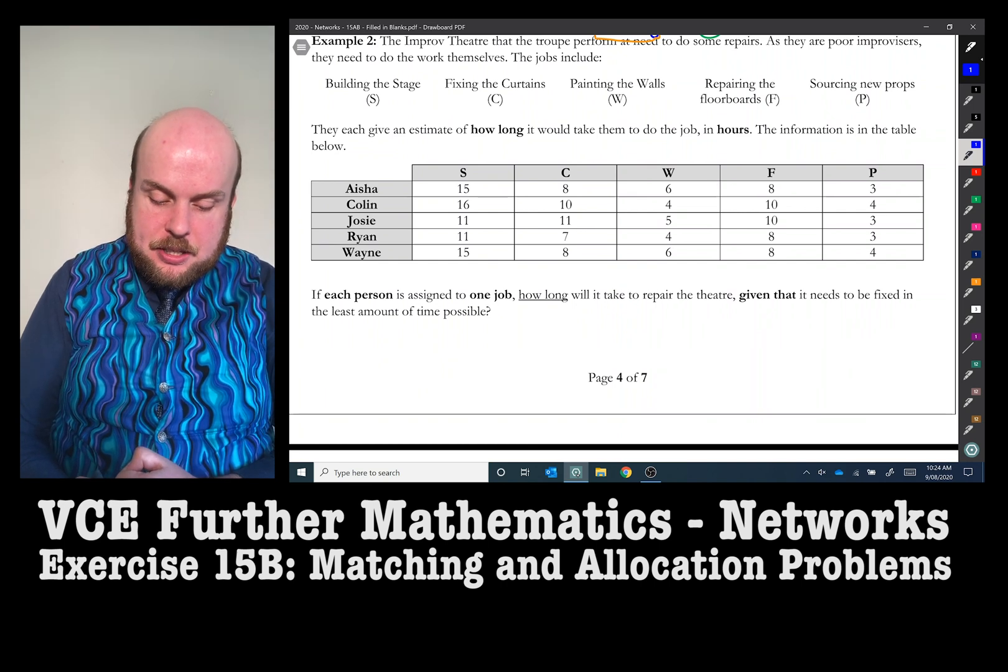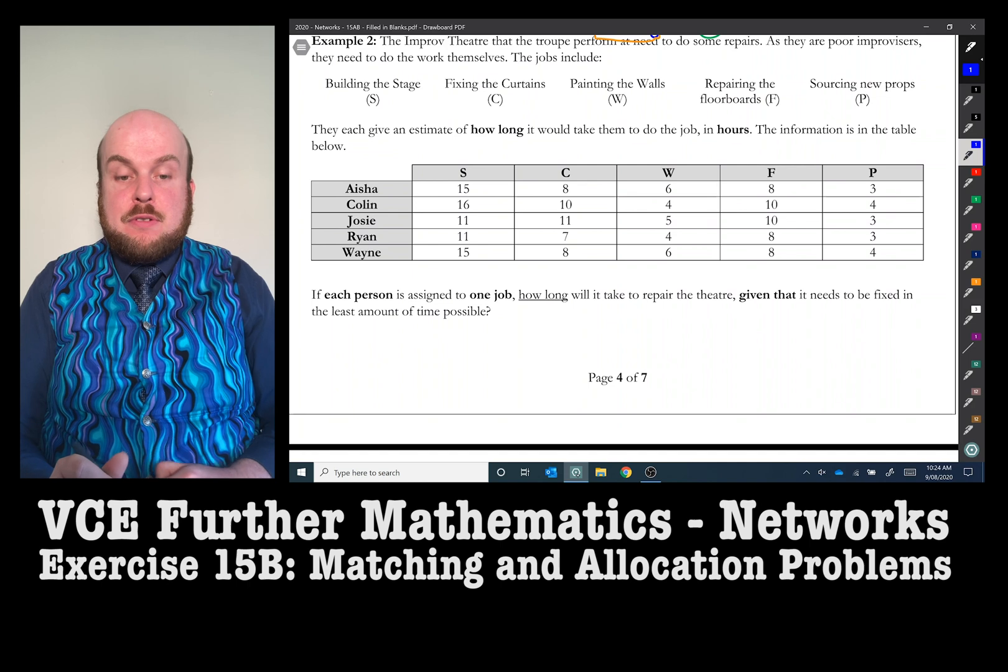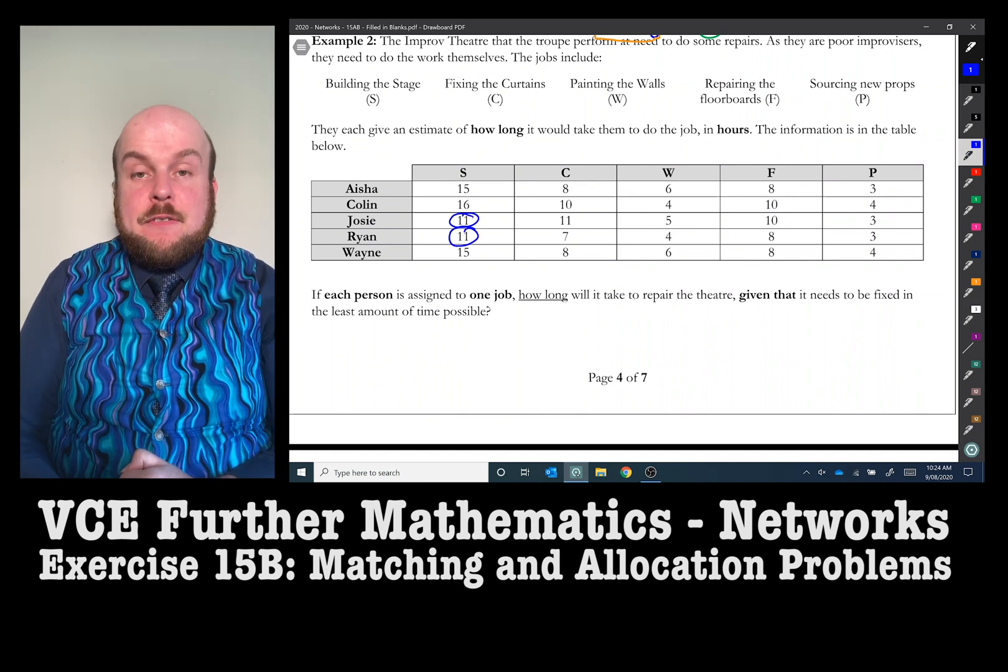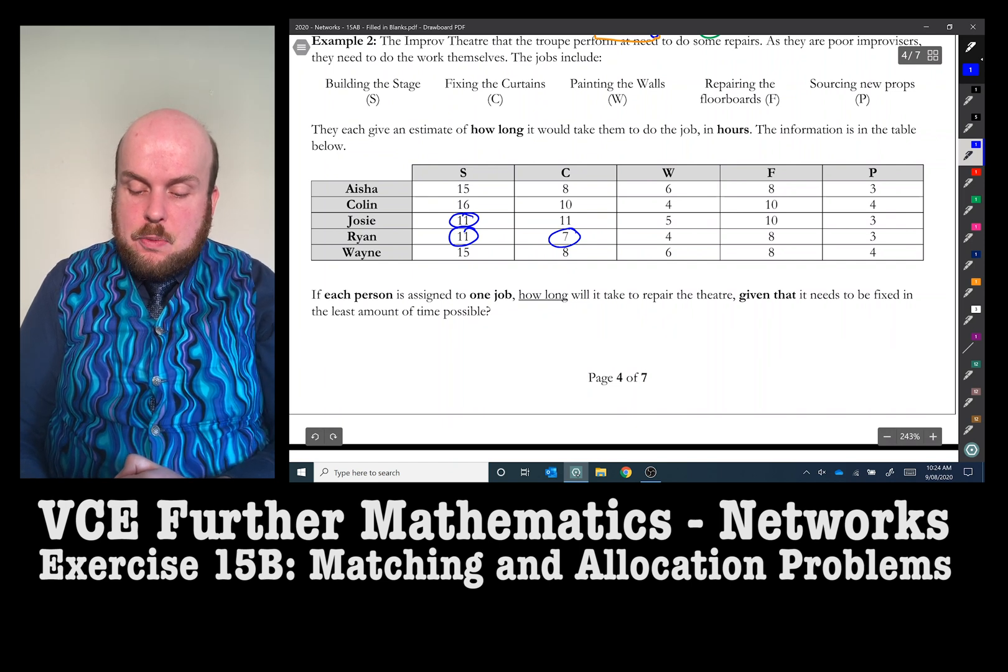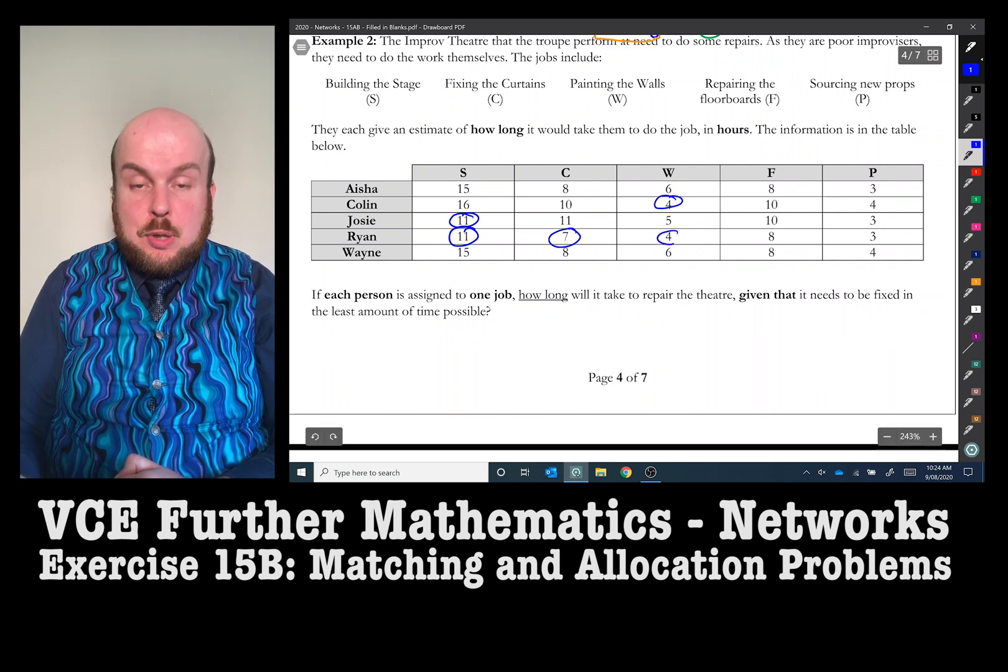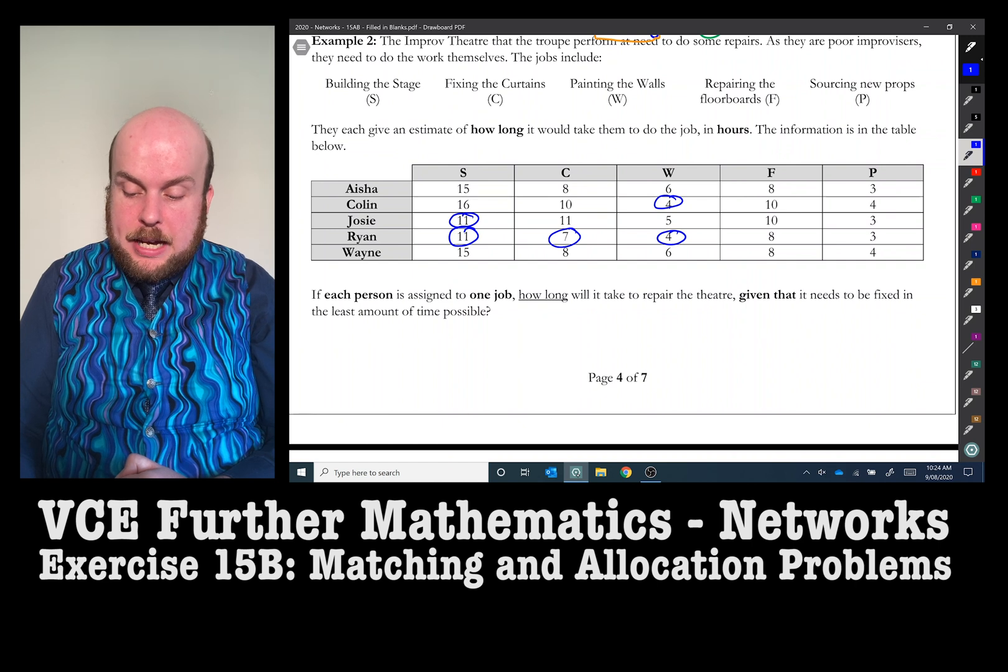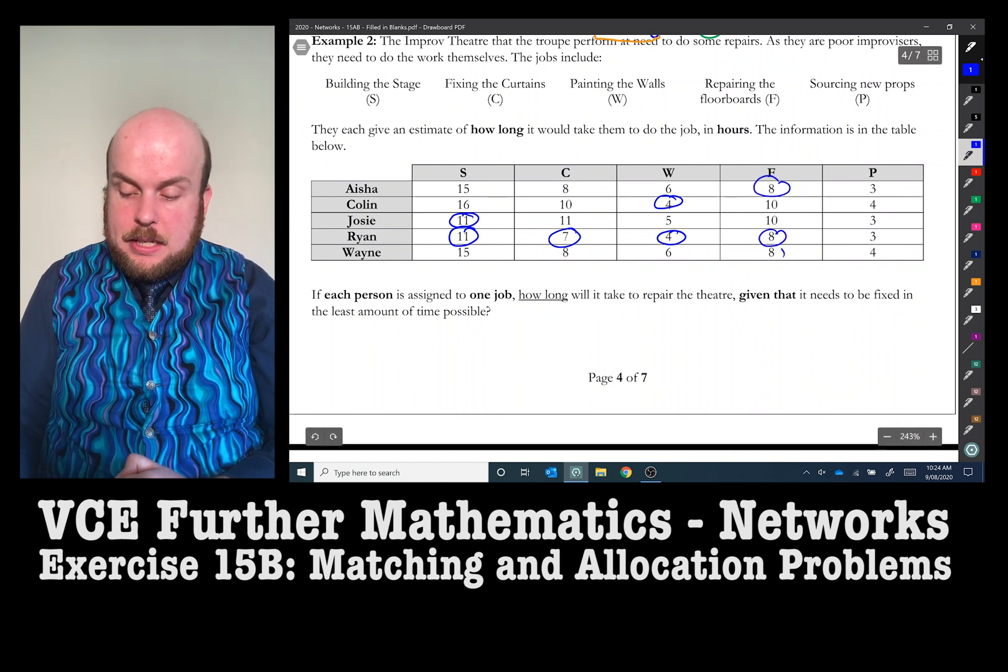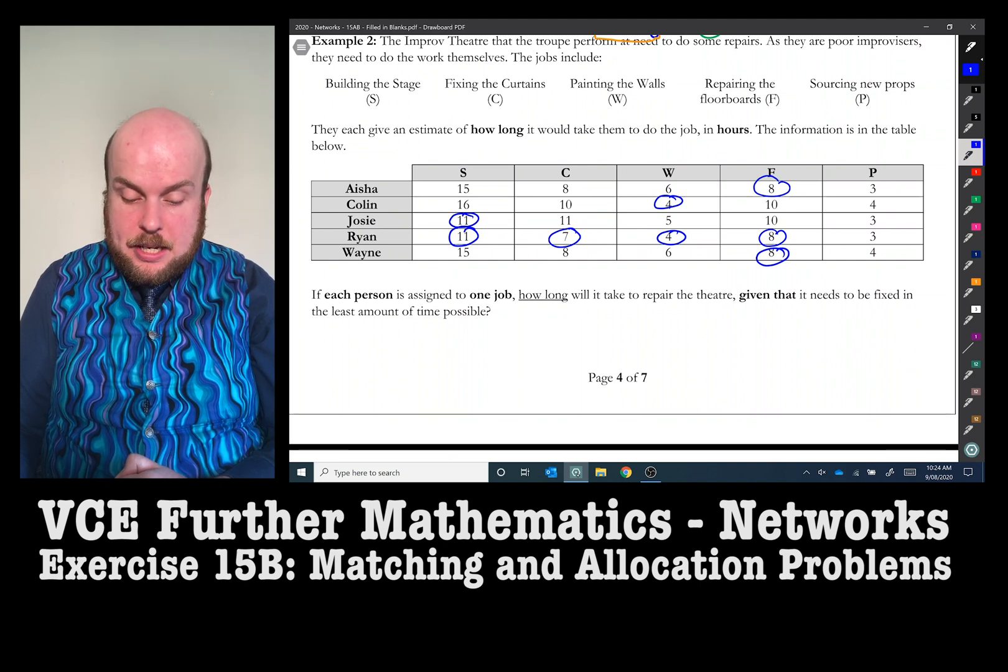So for building the stage, the least amount of time here would be 11 hours with either Josie or Ryan. For fixing the curtains, Ryan does that the quickest with seven. With the painting the walls, it appears that Colin and Ryan can do that the quickest. With the floorboards, the quickest would be Aisha, Ryan and Wayne. And for sourcing new props, the quickest people would be Aisha, Josie and Ryan.